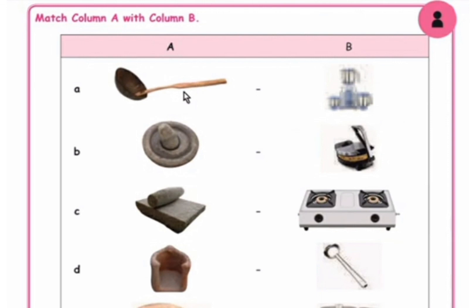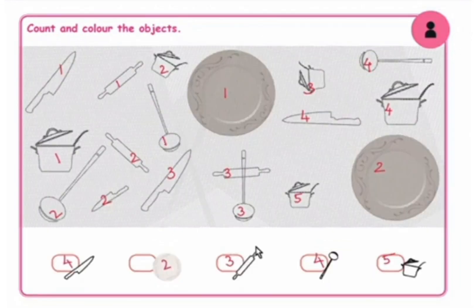Match column A with column B — you have to match the pictures in column A with column B, do it yourself. Page number 109: count and colour the objects. The objects given are plates, knives, spatulas and boiling pots. You have to count them and colour them.